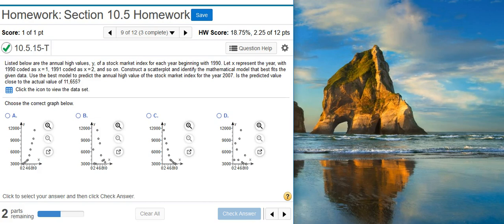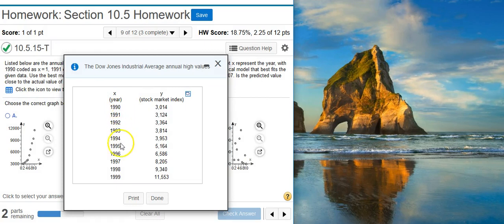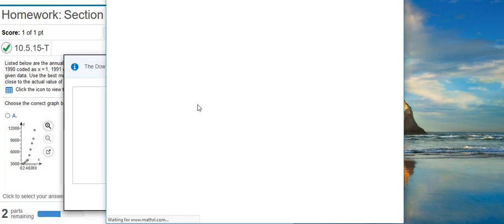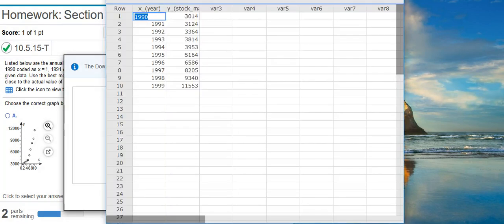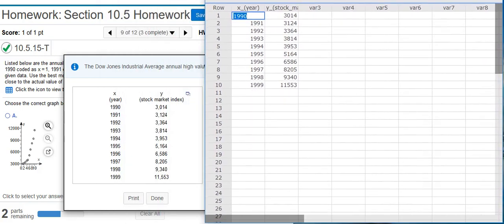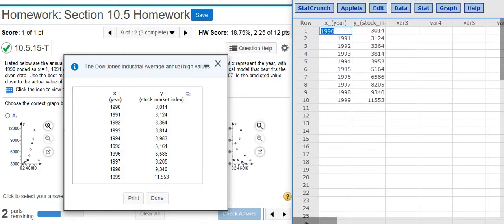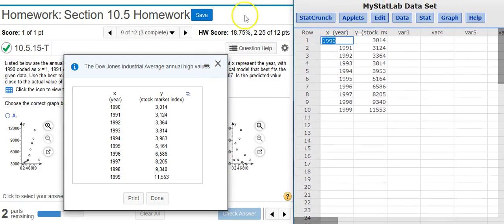So first we're asked to construct the scatterplot. To do that, we need to make the actual model itself. Notice here in the problem statement how we're using coded years, so we have to use coded years to make our model. And the data set that they give us doesn't have coded years. So we've got to actually make that transformation. So let's go ahead and do that first. If I click this icon here, I'm going to dump my data into StatCrunch. So here we are in StatCrunch, and I'm going to resize this window so we can see everything a little bit better.